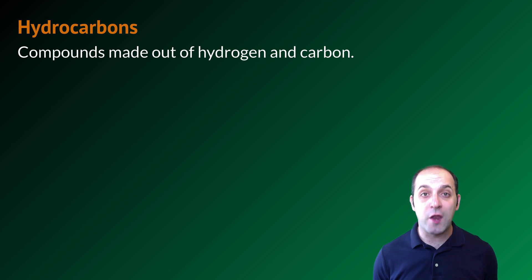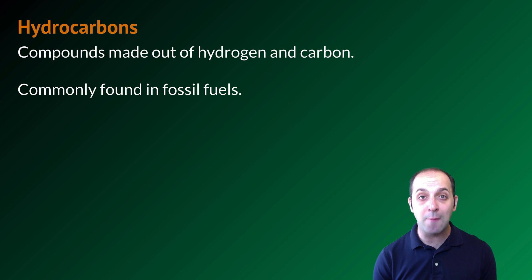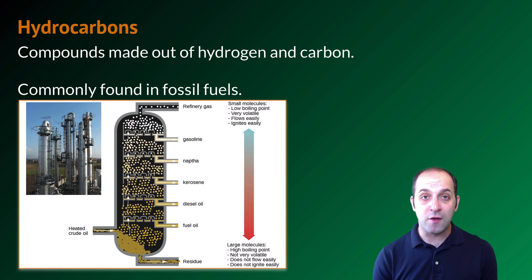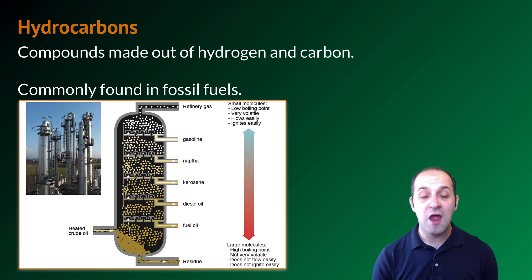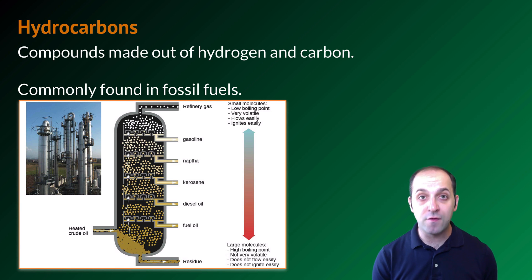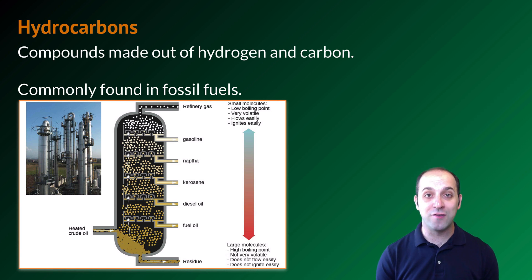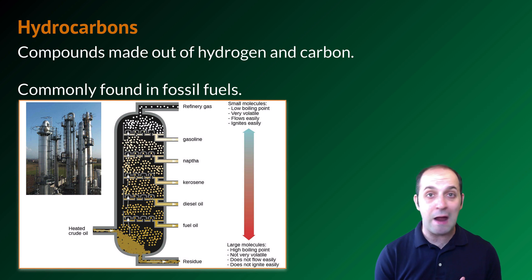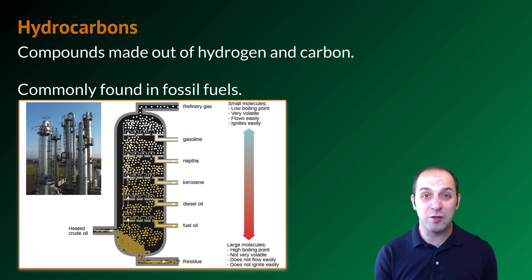We're going to start with the simplest group of organic molecules — the hydrocarbons, which are molecules made out of just hydrogen and carbon. Hydrocarbons happen to be the molecules most common in fossil fuels. Here is a diagram of an oil refinery where crude oil is fed into a distillation apparatus. By heating that crude oil mixture to different temperatures, we can boil off the different components and get things like diesel oil, fuel oil, and the gasoline that runs our cars. So hydrocarbons are also incredibly important for human life in a world that basically runs on them.